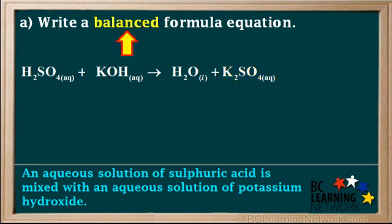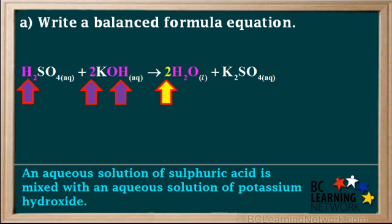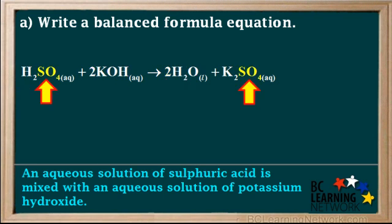It's very important at this point that we balance the formula equation. If the formula equation is balanced, the other equations will automatically be balanced when we write them. We have two K's on the right and one K on the left, so we write a coefficient 2 here. We have two H's and two OH's on the left, so we balance these by writing a 2 in front of the H2O. Not counting the SO4, we now have four H's and two O's on both sides. We have one SO4 on each side, so SO4 is balanced, and the formula equation is now finished and balanced.